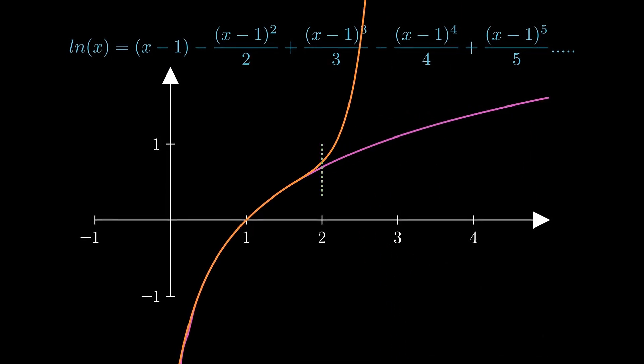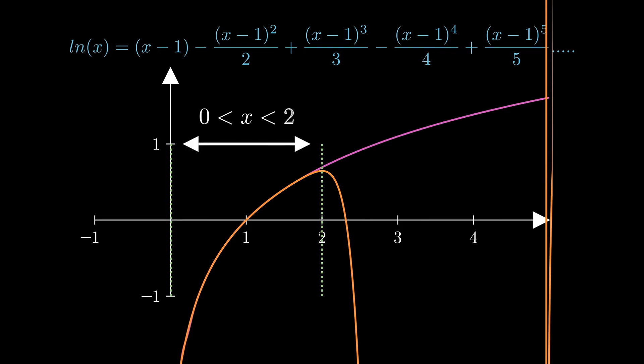But you might notice that if I go beyond 2, the alignment breaks. No matter how many terms I add, the graph is gonna flip up and down. And because we cannot put negative and zero values inside log, we cannot go below zero as well. Therefore, the expansion is valid only for x between 0 and 2.